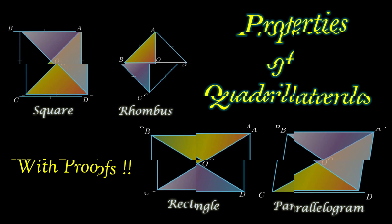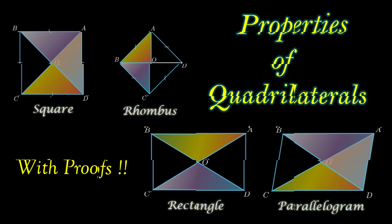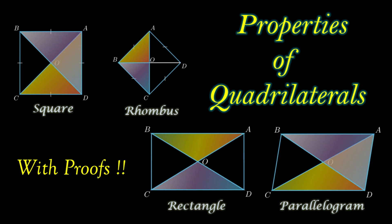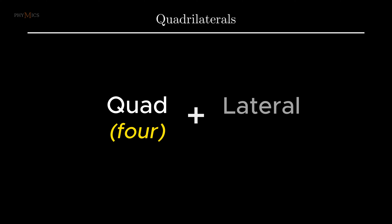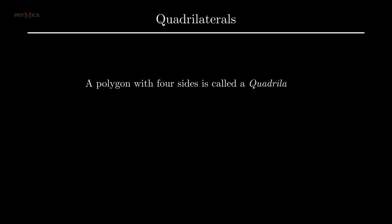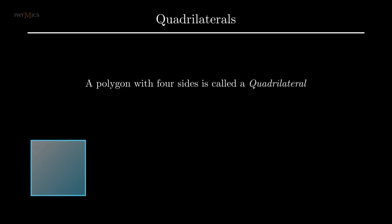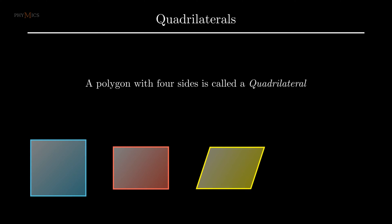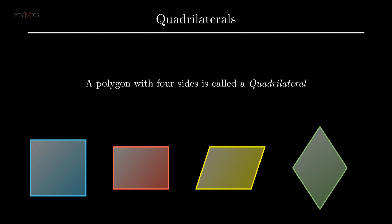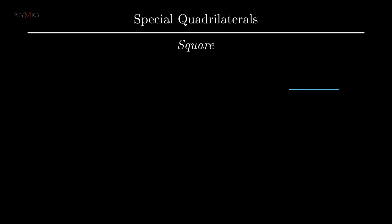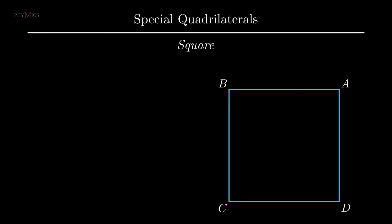In this video we will understand and prove important properties of special types of quadrilaterals. The word quadrilateral consists of two terms: quad, which means four, and lateral, meaning sides. Thus it refers to any closed figure with four sides. Let's understand and prove the properties of the first special quadrilateral, known as square.